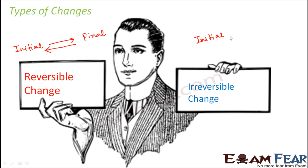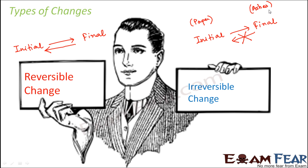When we talk about irreversible change, from the initial state you go to the final state, but it is not possible to come back to the initial state. For example, you have a piece of paper and you burn it. Paper was your initial substance; after burning, you get ashes. Now can you get back the paper from the ashes? You can't. So that is an example of irreversible change.